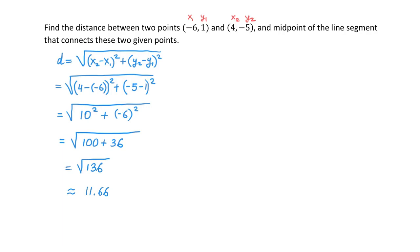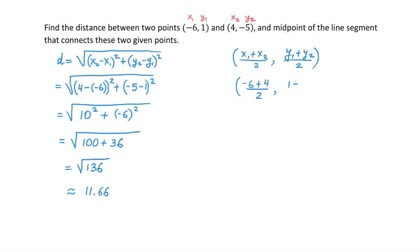Now let's find the midpoint. The formula for the midpoint is: x1 plus x2 all divided by 2, and y1 plus y2 all divided by 2. Let's replace the given numbers. x1 is negative 6, x2 is 4, all divided by 2. y1 is 1, y2 is negative 5, all divided by 2.